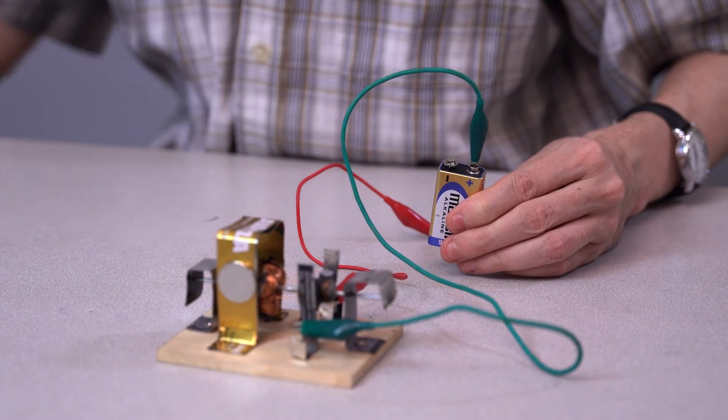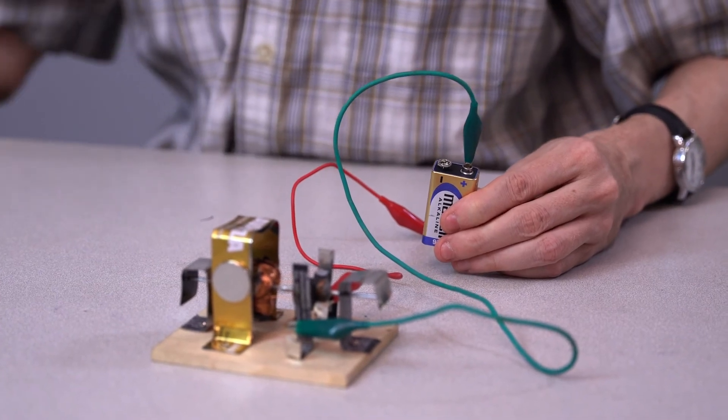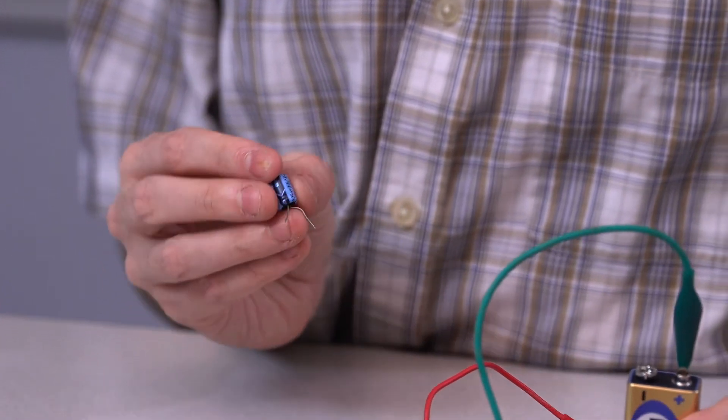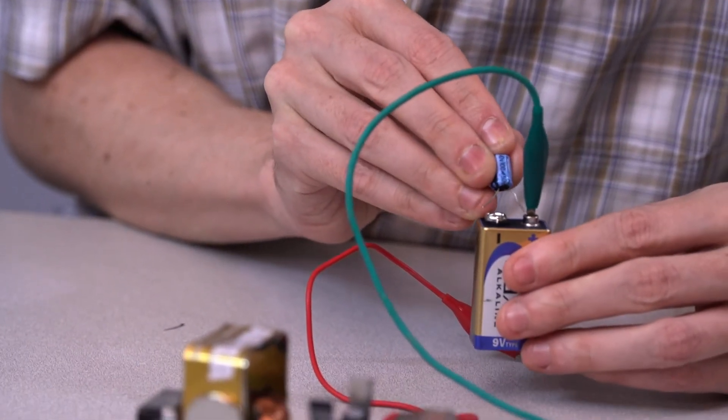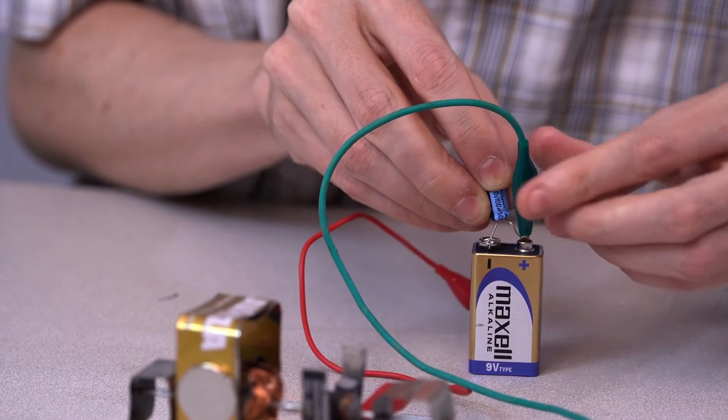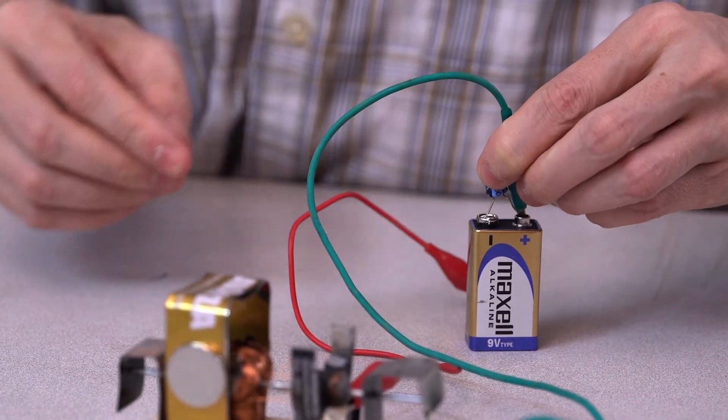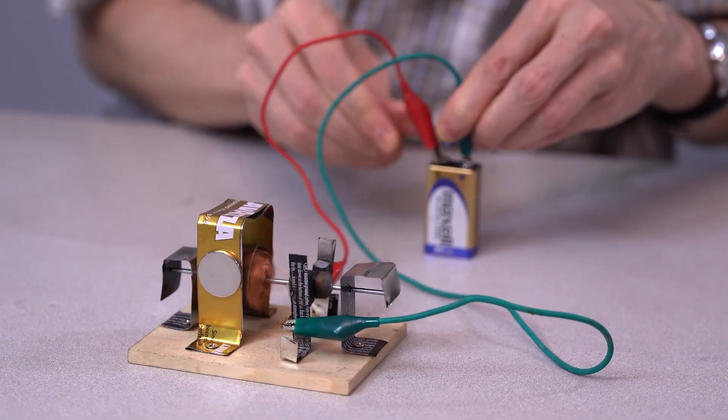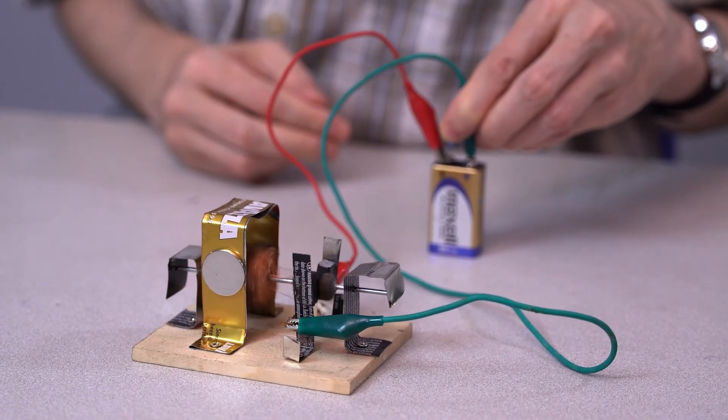To solve this problem, we can put a capacitor in parallel with the battery. I'm going to be using a 100 microfarad electrolytic capacitor. When the motor is off, the capacitor will charge up to 9 volts. And when I turn the motor on, the current will come from the capacitor rather than the battery. See, it has no trouble starting now.